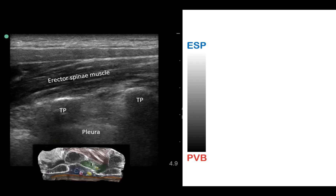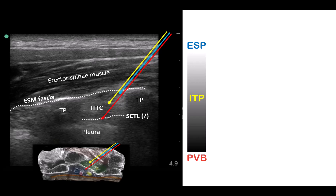Thinking of ESP and paravertebral blocks as two ends of a spectrum: in a typical parasagittal view through the tips of the transverse processes, for an ESP block we insert the needle just under the hyperechoic fascial line separating the erector spinae muscle from the underlying intertransverse connective tissue complex. The paravertebral block is performed by inserting the needle much deeper through that hyperechoic line near the dark fat-filled space superficial to the pleura, which is not always clearly visible. Any needle tip placement and injection between these two points into the intertransverse tissue complex we would now call an intertransverse process or ITP block. Several block names come under this umbrella, of which the MTP described by Iwana Kostash was the first.